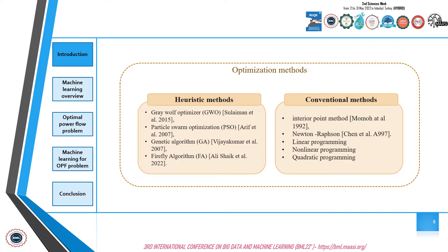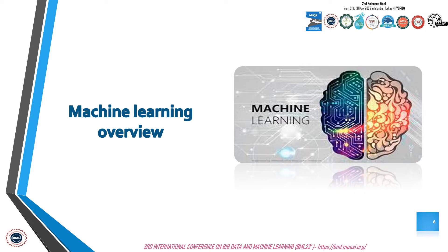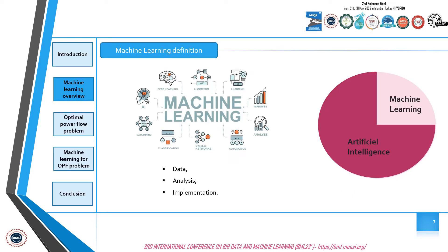The objective of this presentation is to study the contribution of machine learning algorithms to solve the optimal power flow problem. Machine learning algorithms are considered mathematical tools that can be used to analyze data and provide accurate and efficient results. Machine learning is a subset of artificial intelligence techniques dedicated to the design, analysis, development, and implementation of algorithms. These algorithms allow the machine to learn from data systematically to perform a task autonomously without human intervention, and are known for improving their performance over time with new data.